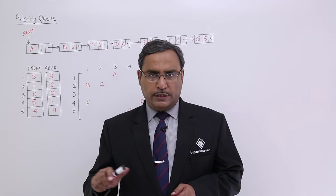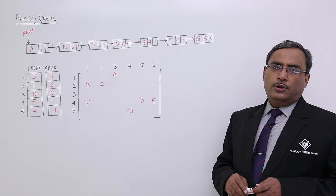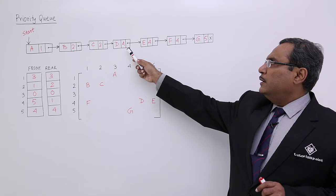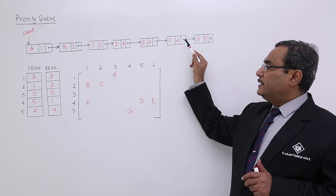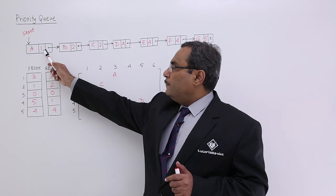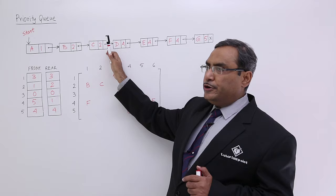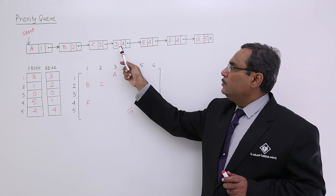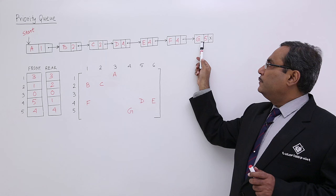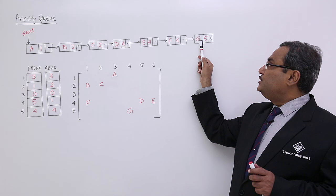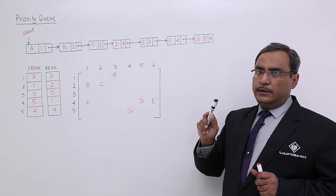Let us go for this example. Let us suppose we are having one priority queue and we have considered that priority 1 is higher than priority 2, higher than priority 4, and higher than priority 5. So priority 5 is lesser than priority 4. All the nodes with priority 1 will come earlier than all the nodes with priority 2. All the nodes with priority 2 will come earlier than nodes with priority 4. All the nodes with priority 4 will come earlier than priority 5 nodes. So G5 will be the last node because F4 has a higher priority than G5. In this way, this particular linked list has been expressed.